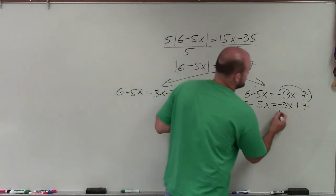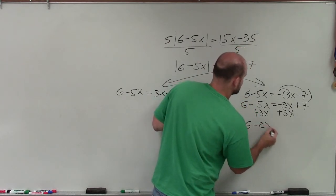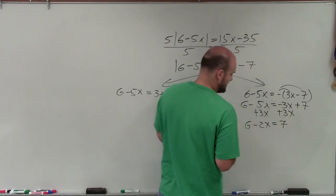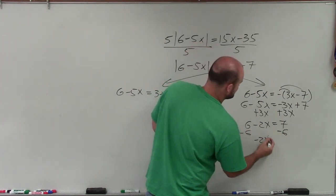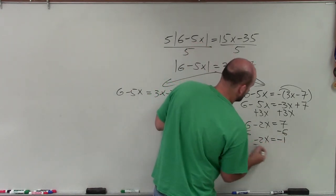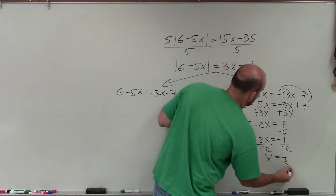So here, now what I go ahead and do is just add 3x to both sides. So I have 6 minus 2x is equal to positive 7. Now to go ahead and solve, I'll subtract 6. Negative 2x is equal to negative 1. Divide by negative 2. x equals 1 half.